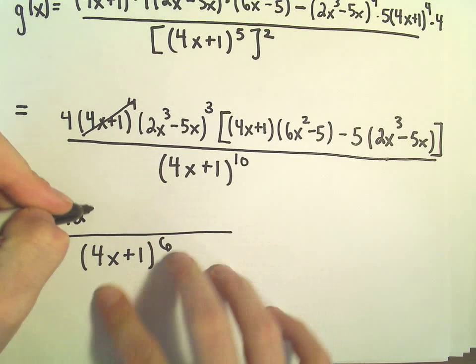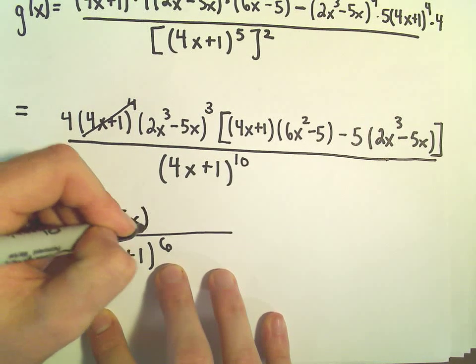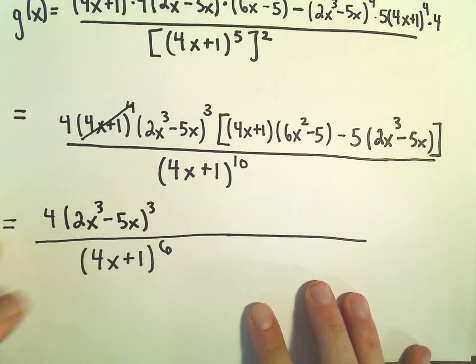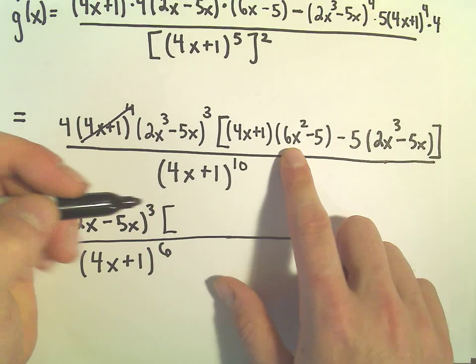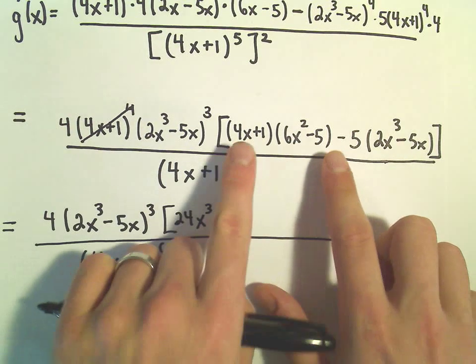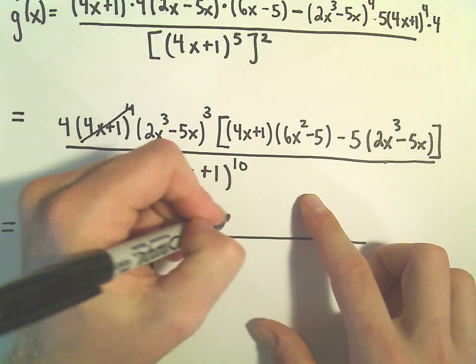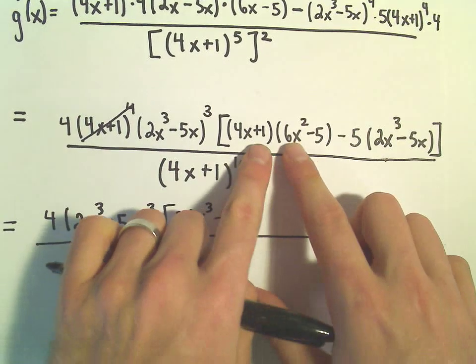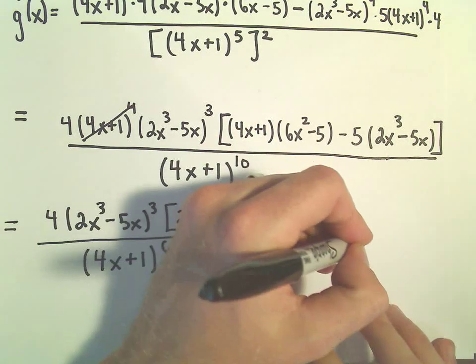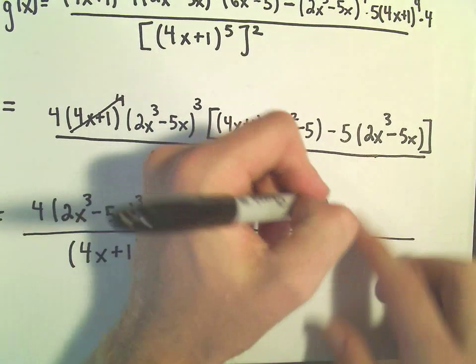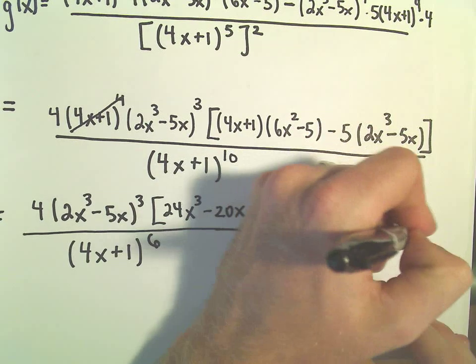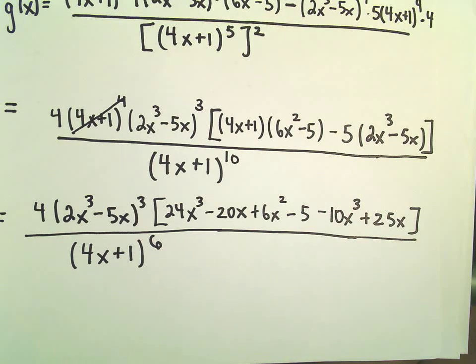So my 2x cubed minus 5x cubed. In the brackets, we could always just multiply this out and simplify it a little bit more. So 4x times 6x squared would be 24x to the 3rd. We would have minus 20x, and then plus 6x squared, and then it looks like we would get a minus 5. And then when we distribute the negative 5, we'll get negative 10x to the 3rd plus 25x.